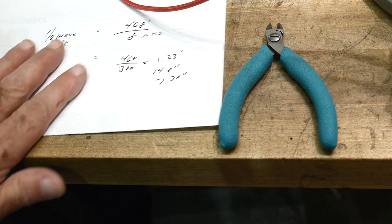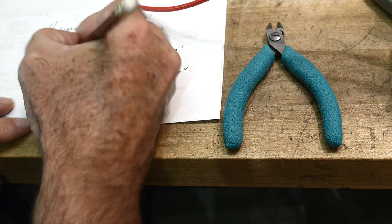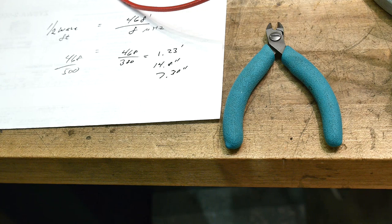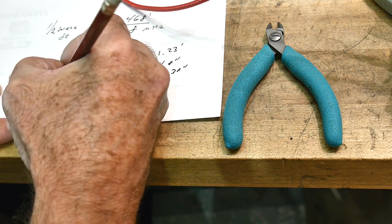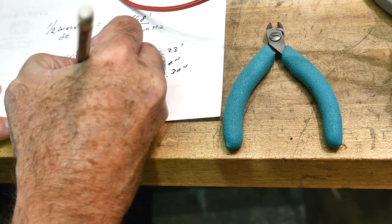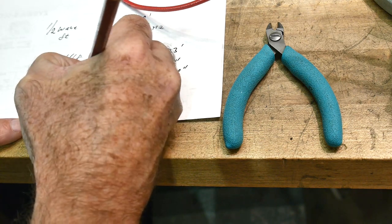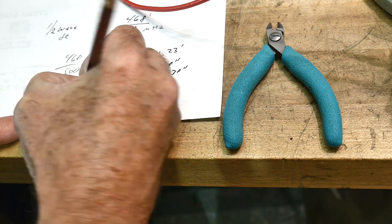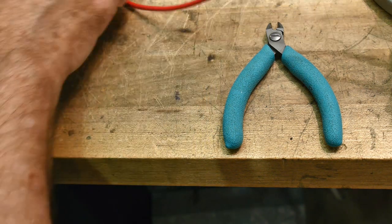So we want 500 megahertz. So we have 468 divided by 500, 468, oops, 500. We get 0.936 feet for 11.23 inches or 5.61 inches per half. Okay. So let's take your antenna.